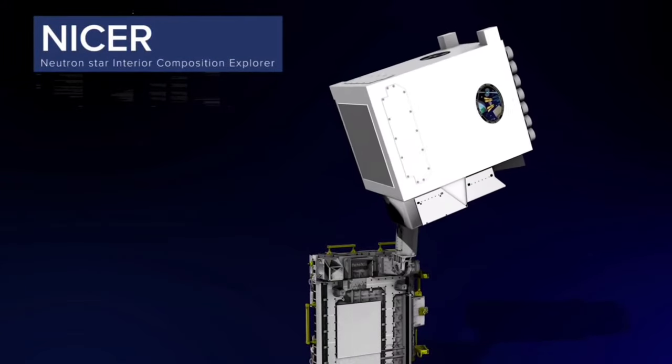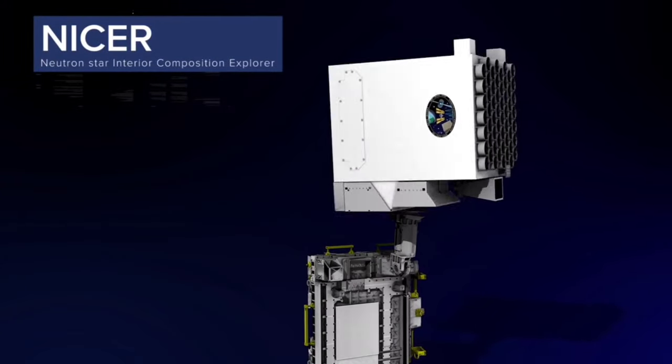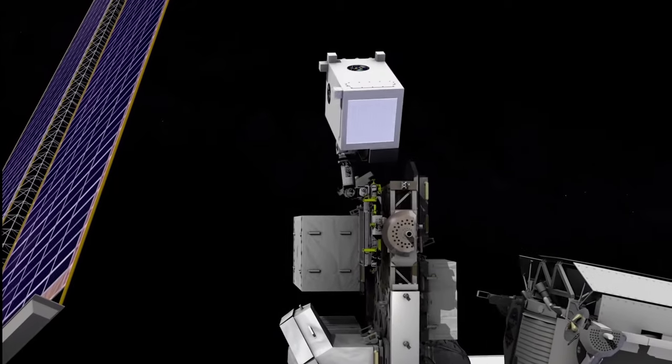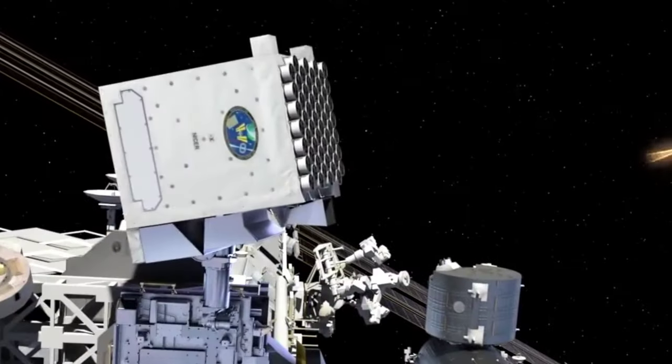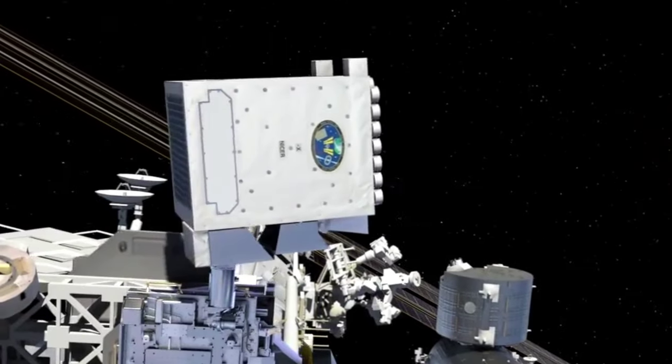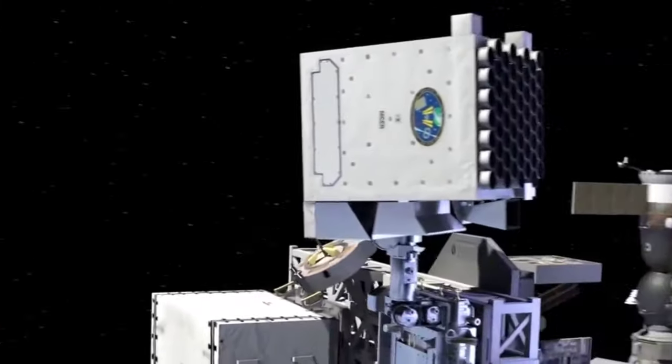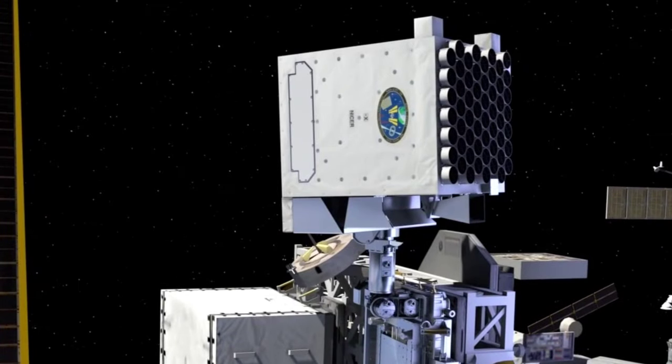The section of NICER that protrudes from the outside of the ISS is shaped like a washing machine, with sides measuring about one meter. One side has a grid of 56 round holes, each with a series of concentric mirrors that focus incoming X-rays on the siliceous sensor at the bottom of each hole.